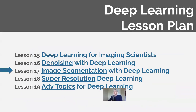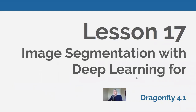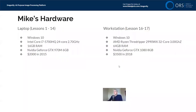Today's content is on deep learning. The lesson plan for this series: we started with an introduction of deep learning background material for imaging science applications, then yesterday's lesson on denoising. Today's lesson will be on image segmentation, which in the literature is often described as semantic segmentation. Then we will talk about super resolution tomorrow and some other topics in lesson 19. So this is lesson 17, image segmentation with deep learning, using Dragonfly 4.1 with some minor customizations from lesson six.